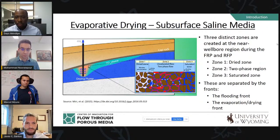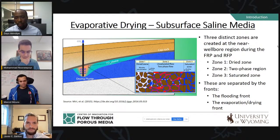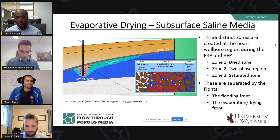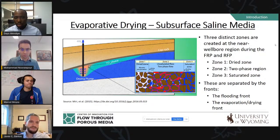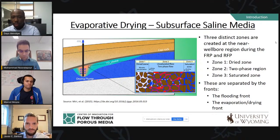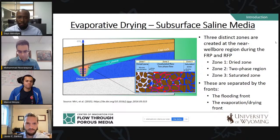For subsurface saline media, the literature describes three distinct zones: Zone 1 is a dried-out zone with abundant precipitates; between that and the unsaturated flow zone we have a mix of salt, CO2, and brine — essentially multi-phase flow; then the unsaturated zone containing 100% brine. These zones are separated by an evaporation front and a flooding front.